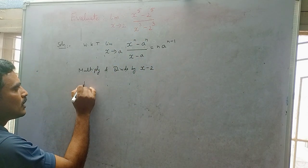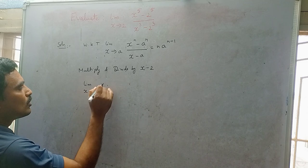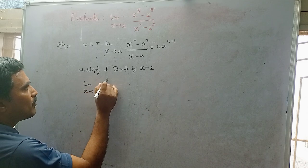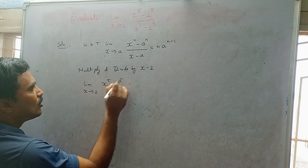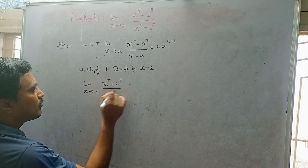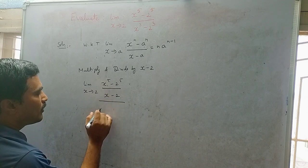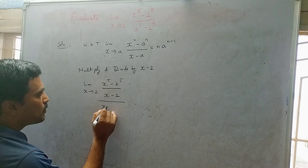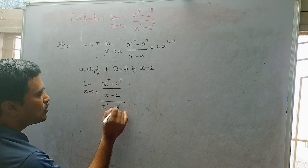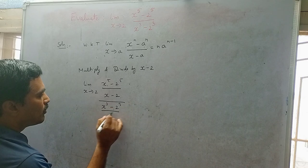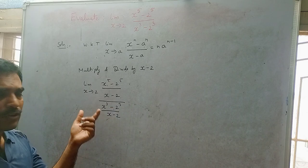After multiplying and dividing by (x minus 2), the expression becomes: limit as x tends to 2 of [(x^5 minus 2^5) divided by (x minus 2)] divided by [(x^3 minus 2^3) divided by (x minus 2)]. Now you can apply the formula.